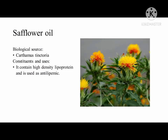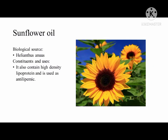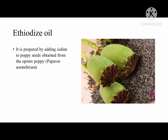Next is safflower oil with biological source Carthamus tinctorius. It contains high-density lipoprotein and is used as an antilipemic agent. In addition, sunflower oil is another example of fixed oil obtained from Helianthus annuus. It also contains high-density lipoprotein and is used as an antilipemic. Another is ethiodized oil, which is prepared by adding iodine to poppy seeds obtained from the opium poppy, Papaver somniferum.